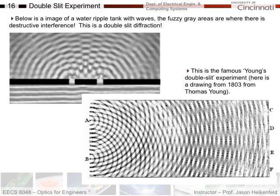This is the diagram from the famous Young's double slit experiment. This is a drawing in 1803 from Thomas Young he did, where he showed if you had two radiators in a double slit, the interference patterns you might see as you move out in distance further away from the slits.